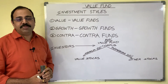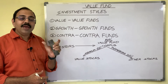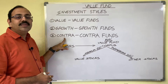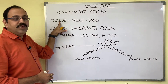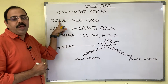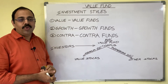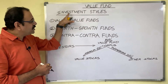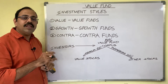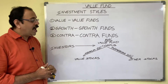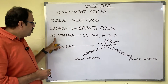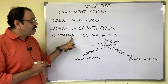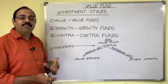There are three commonly used mutual fund investment strategies adopted by a fund manager: value strategy, growth strategy, and contrast strategy. If a value strategy is used, the resulting funds are known as value funds. If a growth strategy is adopted, those are growth funds. If a contrast strategy is applied, those are contra funds.